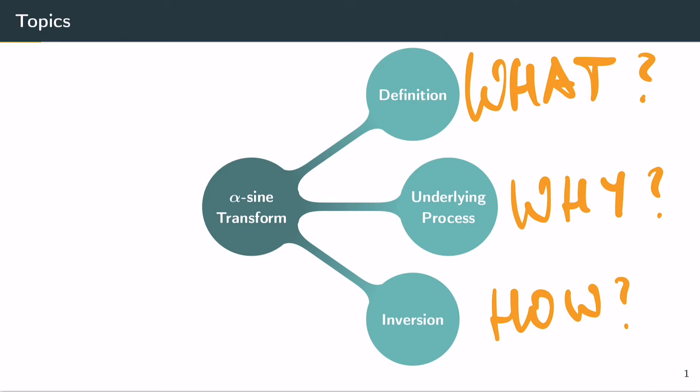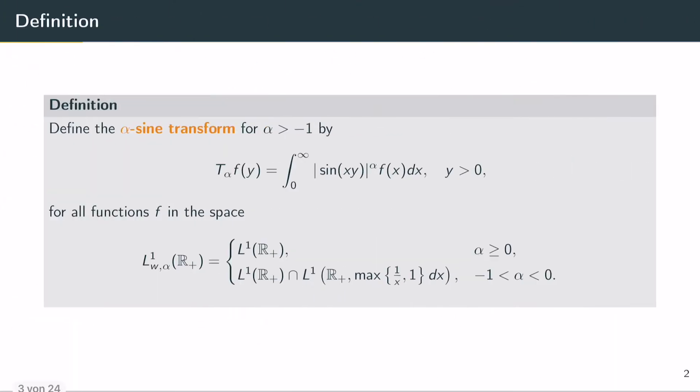Let's begin with the definition. The alpha sine transform on R is defined for all alphas greater than negative one by this integral transform you see here.